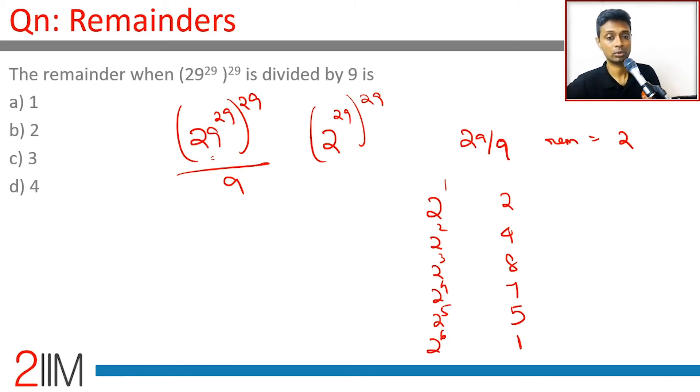So far so good. 2^6 gives a remainder of 1. Let's think about 2^29 whole power 29. This is 2^(29×29). 29 squared is 841, so we need 2^841.